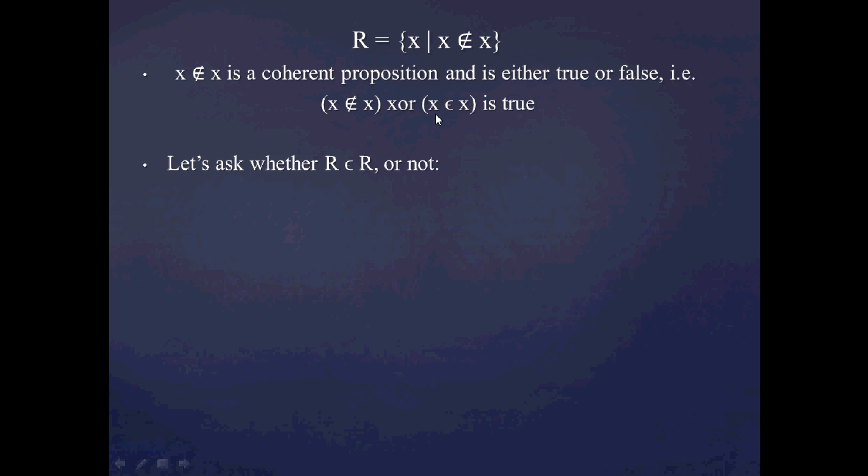So now let's ask the pathological question, whether R is a member of the set R. Now clearly, as I said here, either R is not an R or R is an R. And one of those two has to be true. They can't both be true. And they both can't be false.